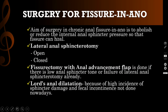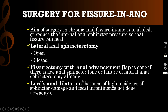The aim of surgery in chronic anal fissure-in-ano is to either abolish or reduce the internal anal sphincter pressure so that the fissure can heal. The surgeries are: number one, lateral internal sphincterotomy, which could be done either by open method or closed method. Or, we can do fissurectomy with anal advancement flap, which is done if there is low anal sphincter tone or failure of lateral internal sphincterotomy which was done already.